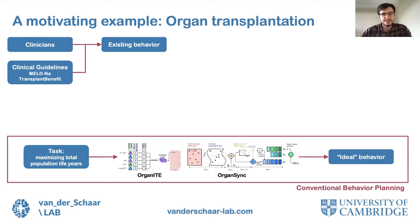On the other hand, we have behavior which we consider to be ideal, given our current understanding of organ transplantations. Identifying this ideal involves establishing goals we desire to achieve with transplantation, such as maximizing total population life years, and applying conventional methods of behavior planning. Organite and OrganSync are examples of such methods developed within our lab.